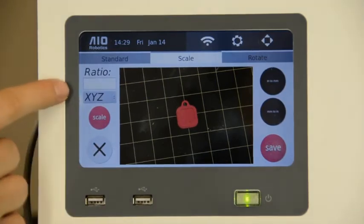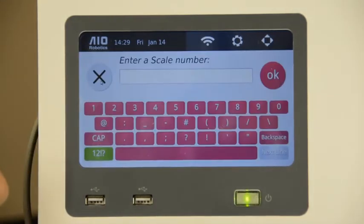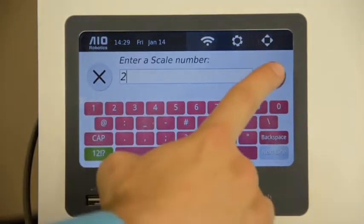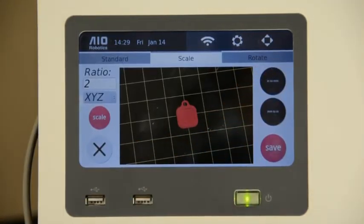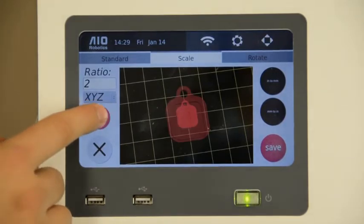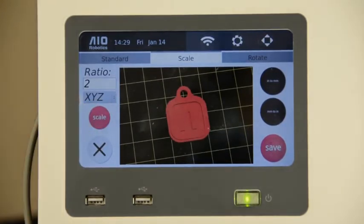Here we type in a new ratio. This ratio should be times 2 because we would like to double the size. Next step we click OK. Then we click the scale button. As you can see, the size of the keychain changed.